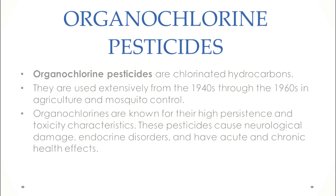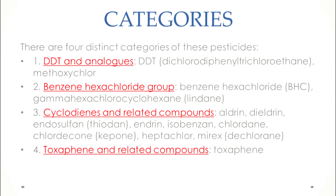They are very toxic to insects and pests, instantly killing them, which is why they are called pesticides. These pesticides cause neurological damage, endocrine disorders, and have acute and chronic health effects. These effects are not just on insects but also on humans — if someone ingests organochlorine pesticide, it will cause poisoning, leading to neurological damage, endocrine disorders, and other health effects.